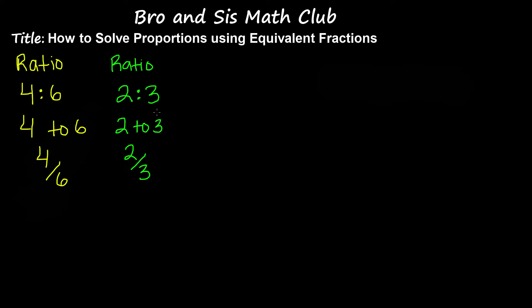So we have these two ratios, and now I'm going to say that these two ratios are proportional. There's two ways to write proportions. One way is to write as 4 to 6 is proportional to 2 to 3.